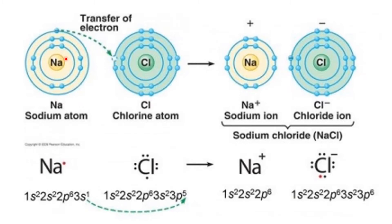That 1 electron can be taken from sodium — this is called transfer of electron. When 1 electron from sodium gets transferred to chlorine, sodium becomes Na+ and chlorine becomes Cl- because sodium has lost 1 electron, gaining 1 positive charge, and chlorine has gained 1 electron to become chloride ion. These positive and negative charges attract each other, and that is why sodium chloride, NaCl, is formed. This is an example of an ionic compound.